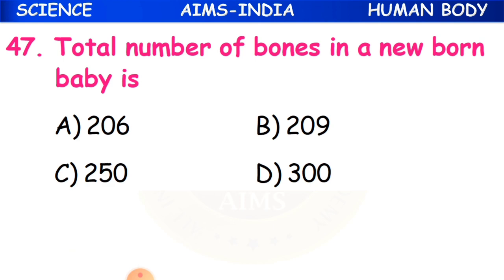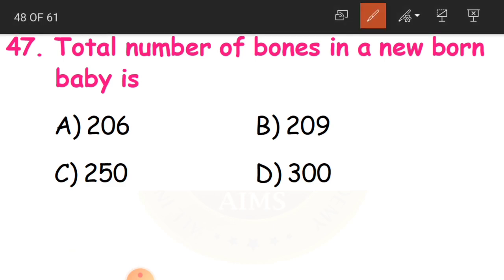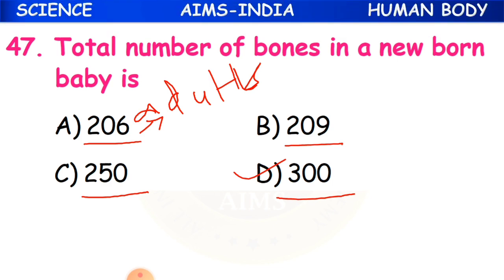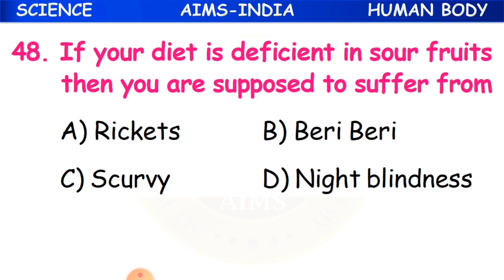Question 47: Total number of bones in a newborn baby is - 206, 209, 250, or 300? The answer is 300. For adults it is 206. As the baby grows, some bones grow together, so the number decreases.